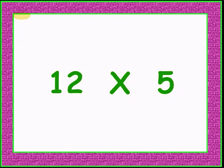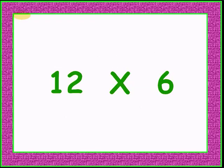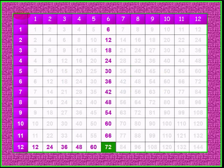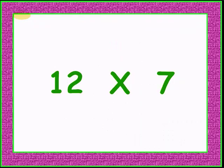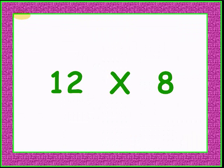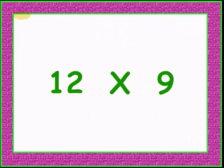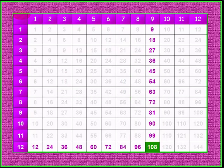12 times 5 is 60. 12 times 6 gives 72. 12 times 7 is 84. 12 times 8 gives 96. 12 times 9 is 108.